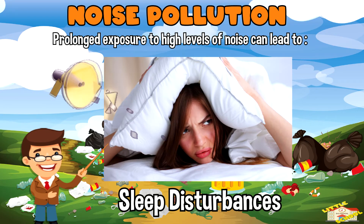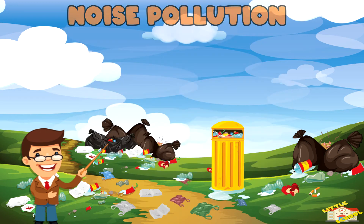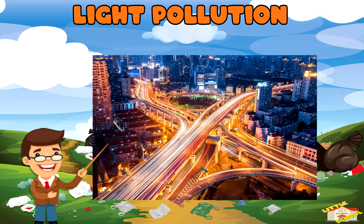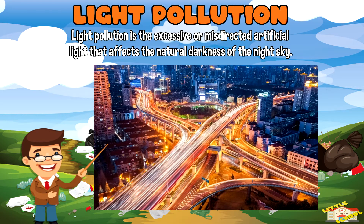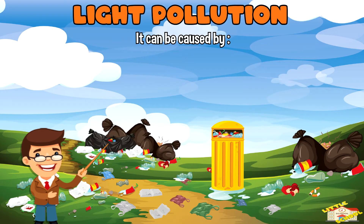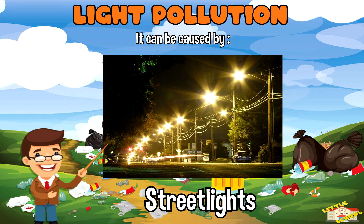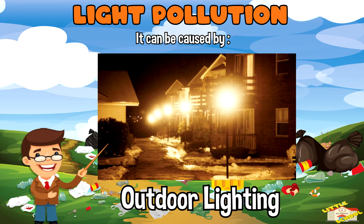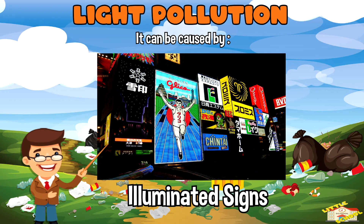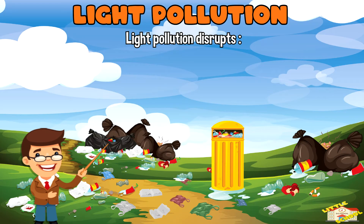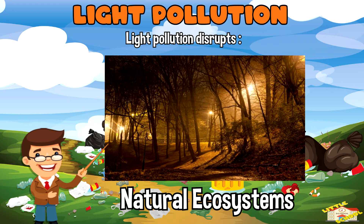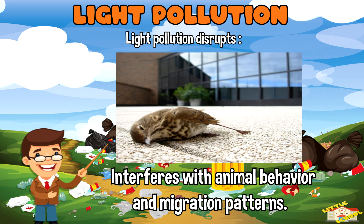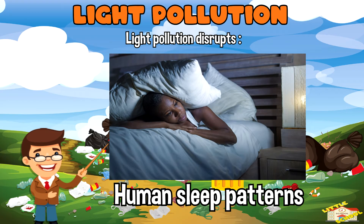Light pollution is the excessive or misdirected artificial light that affects the natural darkness of the night sky. It can be caused by street lights, outdoor lighting, and illuminated signs. Light pollution disrupts natural ecosystems, interferes with animal behavior and migration patterns, and can negatively impact human sleep patterns.